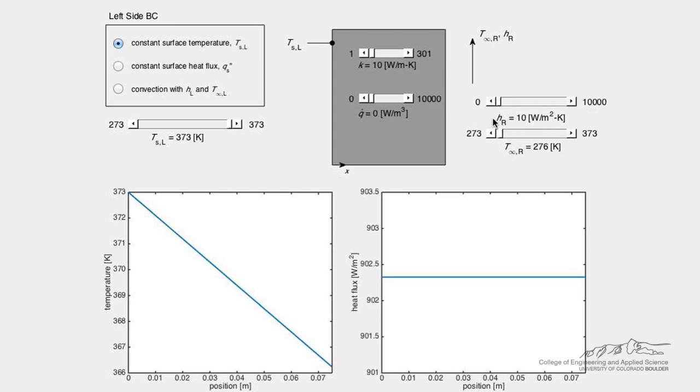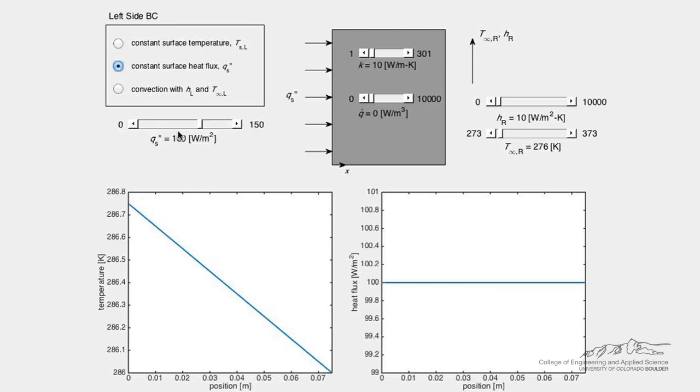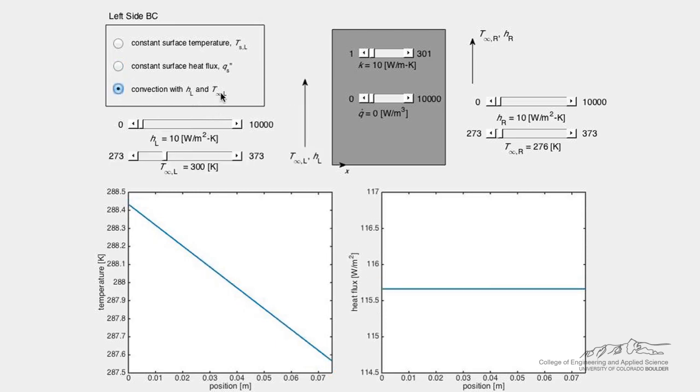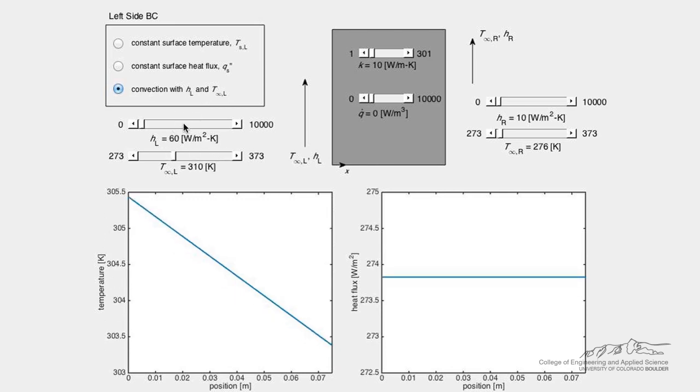and a heat transfer coefficient of h sub r. The boundary condition on the left side of the wall can be chosen with the radio buttons. You can select a constant surface temperature at T sub s l, a constant surface heat flux at Q sub s double prime, or a convection boundary condition with ambient fluid temperature T infinity sub l and heat transfer coefficient h sub l.